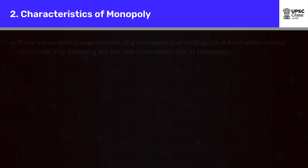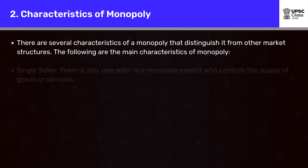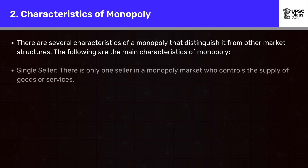Characteristics of Monopoly. There are several characteristics of a monopoly that distinguish it from other market structures. The following are the main characteristics of monopoly. Single seller: there is only one seller in a monopoly market who controls the supply of goods or services.